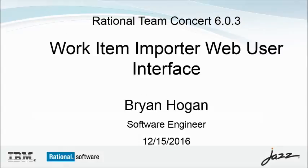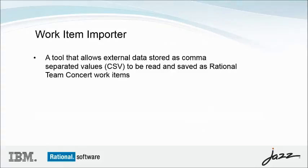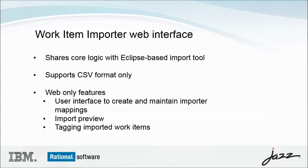Welcome to this demonstration of the Rational Team Concert Work Item Importer Web User Interface. The Work Item Importer is a tool that allows external data stored as comma-separated values, or CSV, to be read and saved as Rational Team Concert work items. The Web User Interface is introduced in version 6.03 of Rational Team Concert and shares core logic with the long-standing Eclipse-based import tool. The web tool supports import using CSV only, while the Eclipse tool supports other formats as well.